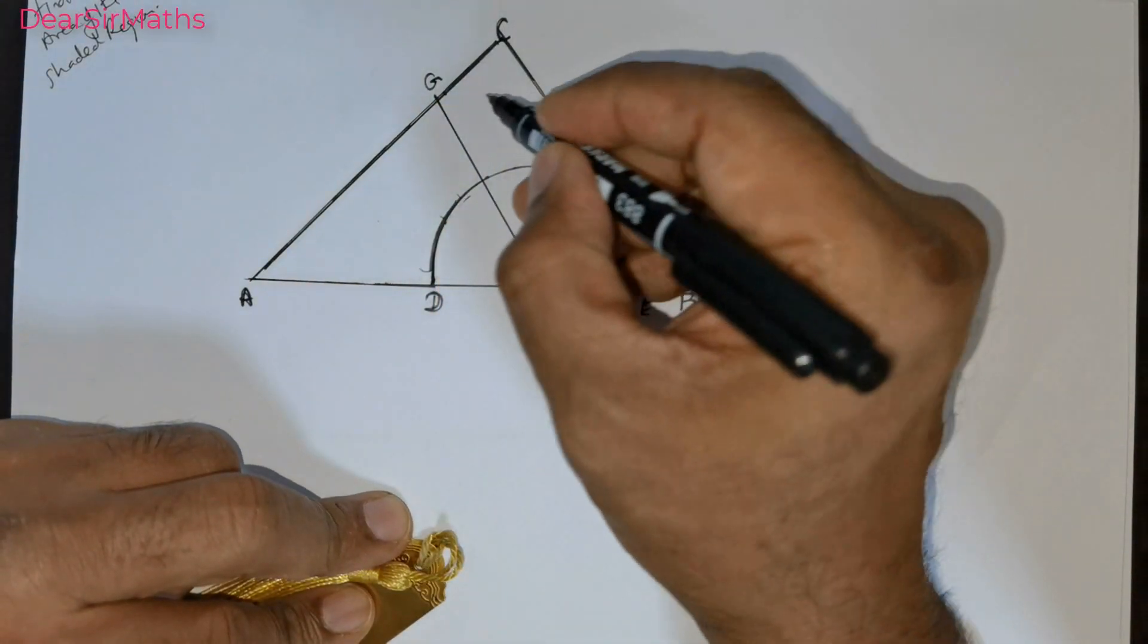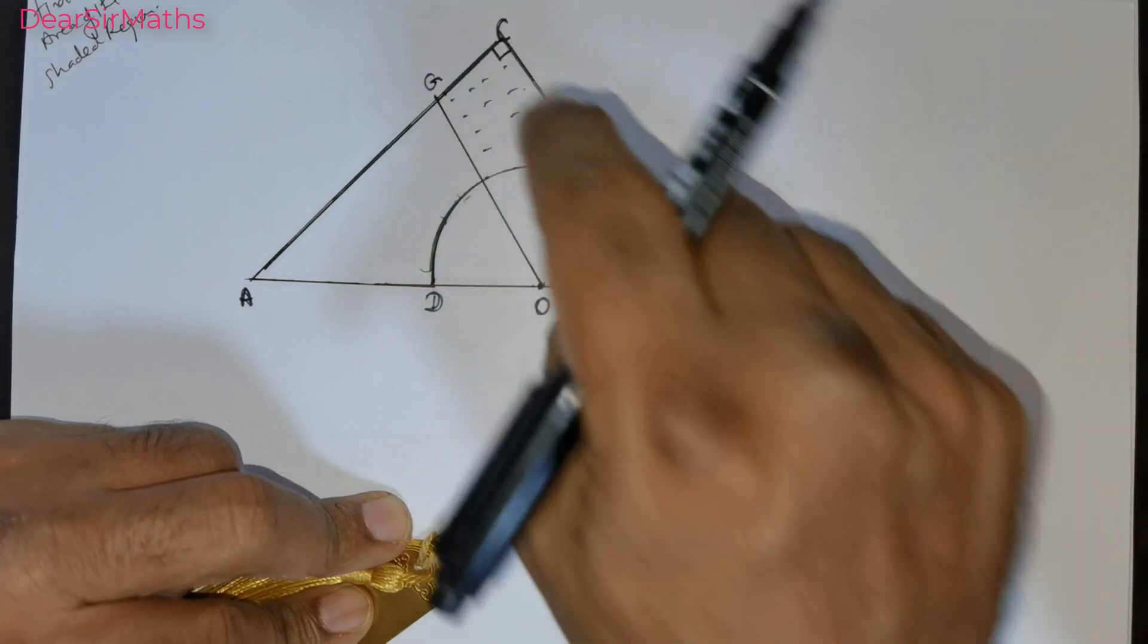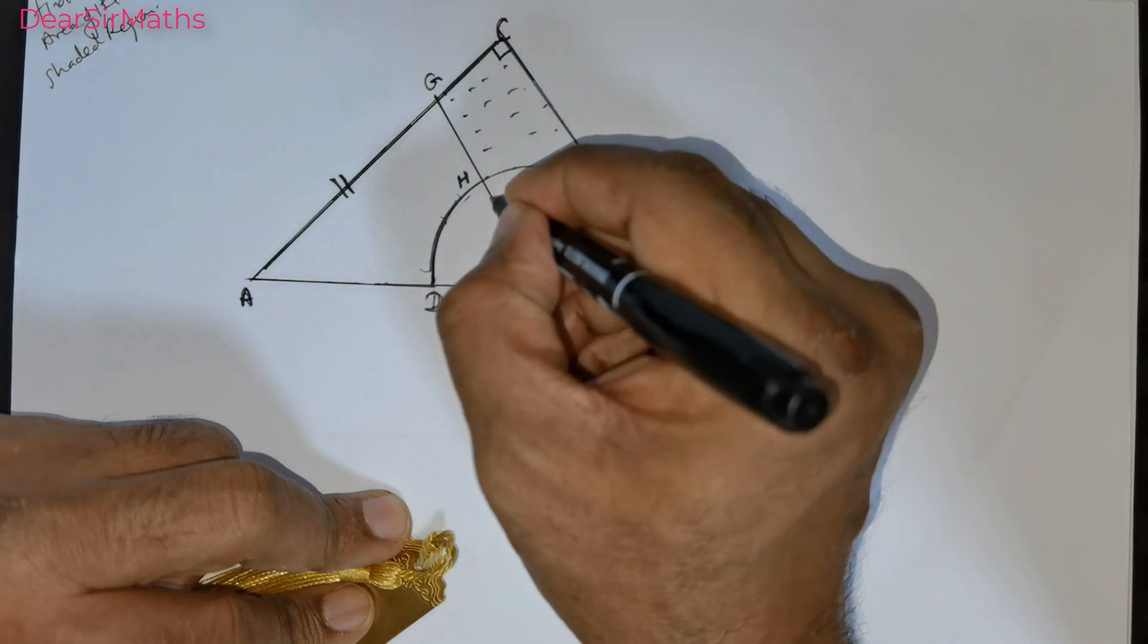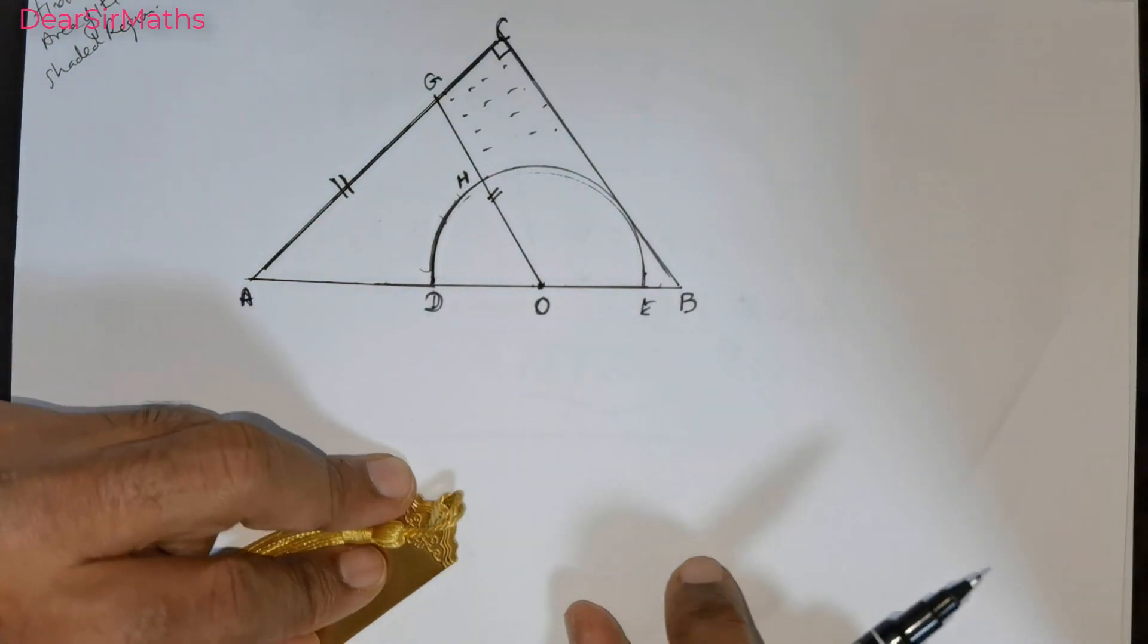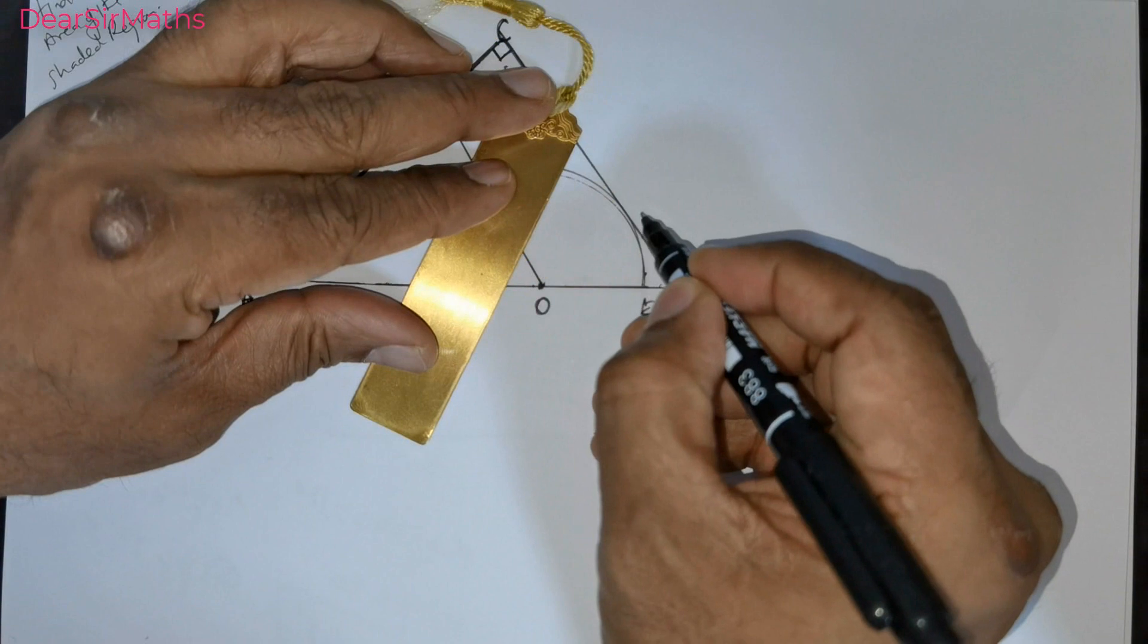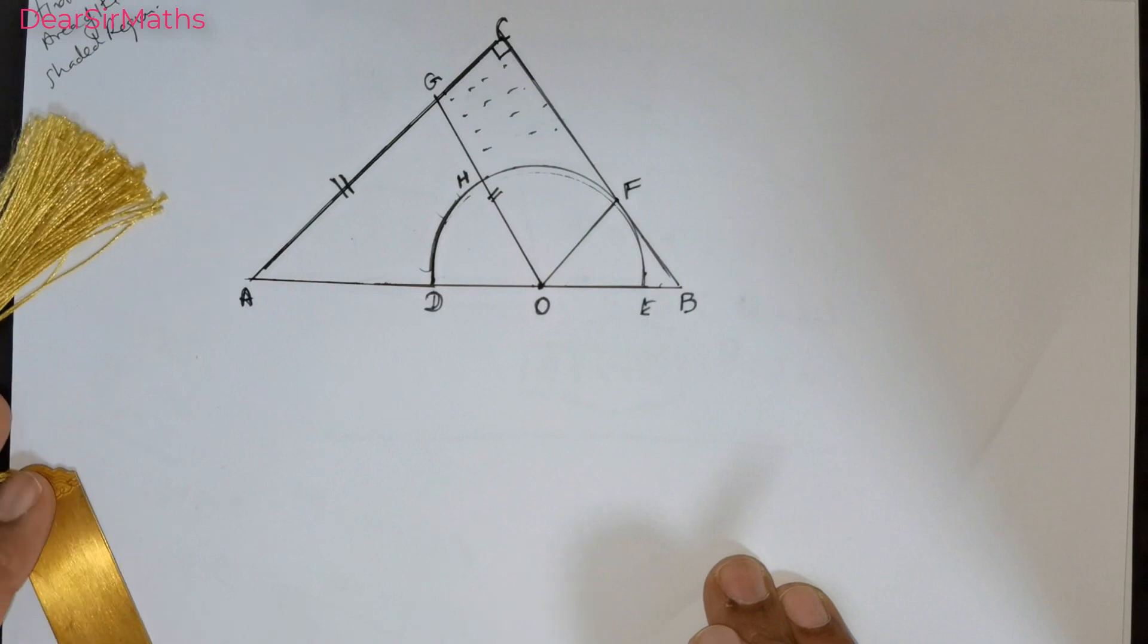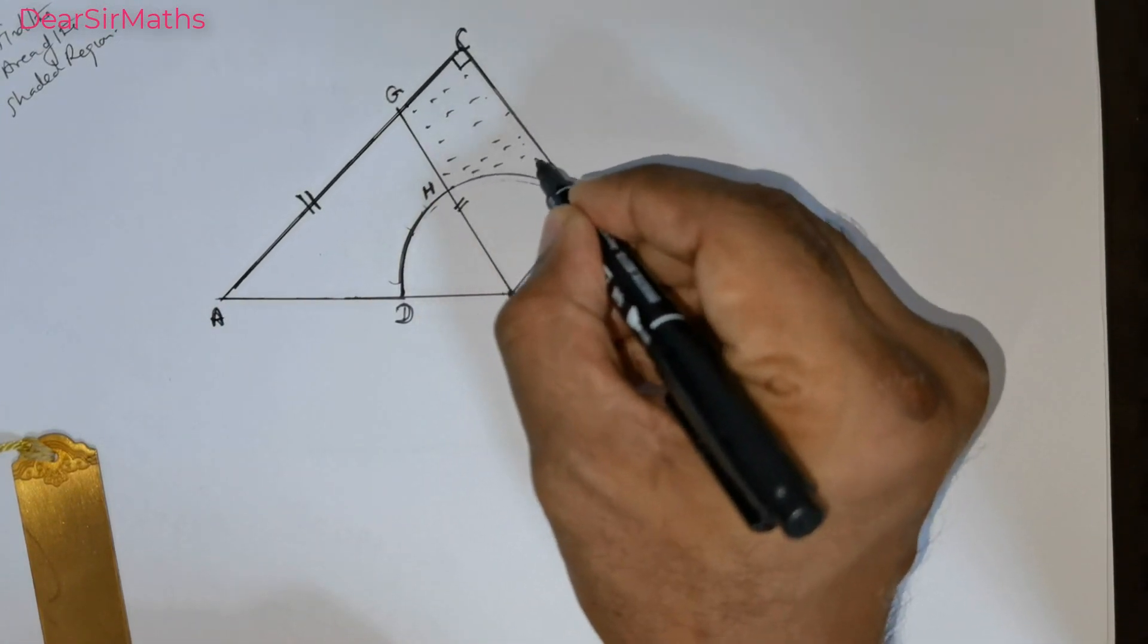We are expected to find the area of this shaded region. We have been given this to be 90 degrees, and this is H. One more information is that this is an isosceles triangle here. Another information is from O, there is a hit at the point F. With these information, we are expected to find the area of this shaded region.